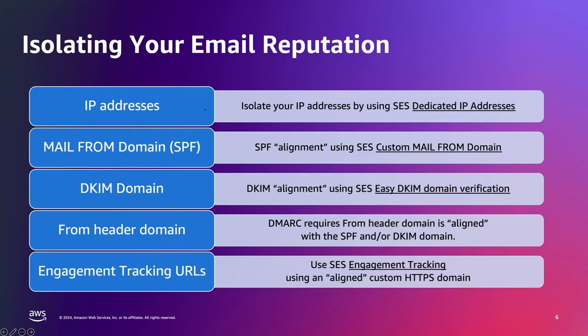To align your from header with DKIM and SPF: DMARC stands for Domain-Based Message Authentication, Reporting, and Conformance. It is an email authentication protocol that uses SPF and DomainKeys Identified Mail, or DKIM, to ensure that only authenticated senders can use your domain. In order to comply with DMARC, messages must be authenticated through either SPF or DKIM, but ideally when both are used with DMARC, you'll be ensuring the highest level of protection possible for your email sending. By using a custom mail from with Amazon SES, you will achieve DMARC compliance because your messages will be SPF aligned. SPF alignment means that the mail from domain and the domain in the from header are both in the same organizational domain namespace. DKIM alignment means that the DKIM domain and the domain in the from header are both in the same organizational domain namespace.